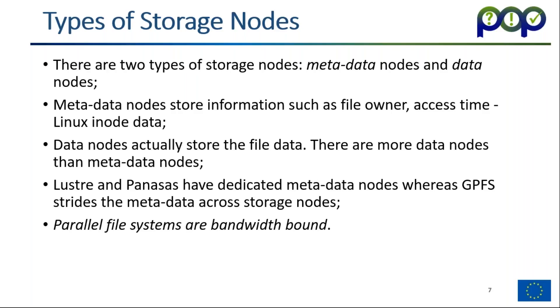Data nodes store the actual file data and usually there are many more data nodes than metadata nodes. Lustre and Panasas have dedicated metadata nodes whereas GPFS strides the metadata across the storage nodes. One thing to note is that parallel file systems are bandwidth bound, meaning you should try and write as much data as possible in fewer requests.